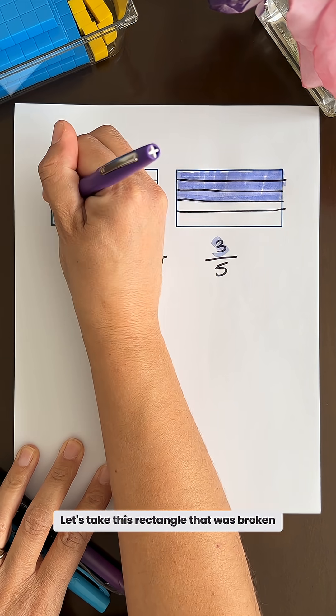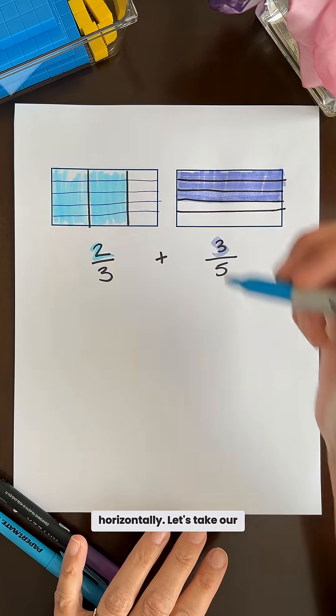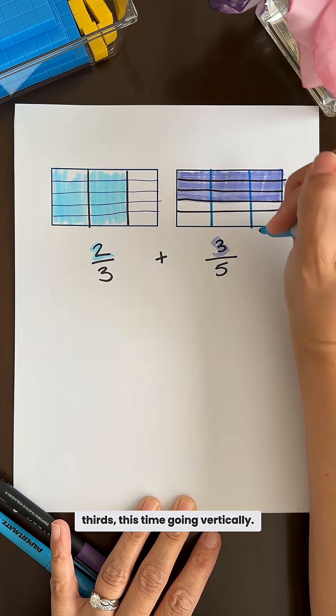Let's take this rectangle that was broken into thirds and now also break it into fifths going horizontally. Let's take our second rectangle and also break it into thirds, this time going vertically.